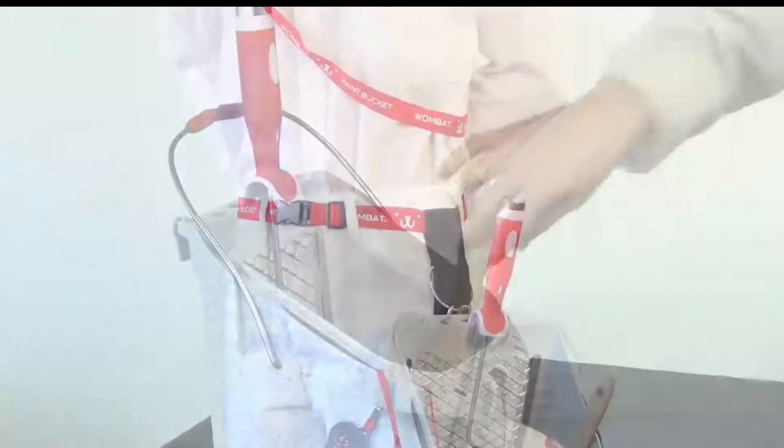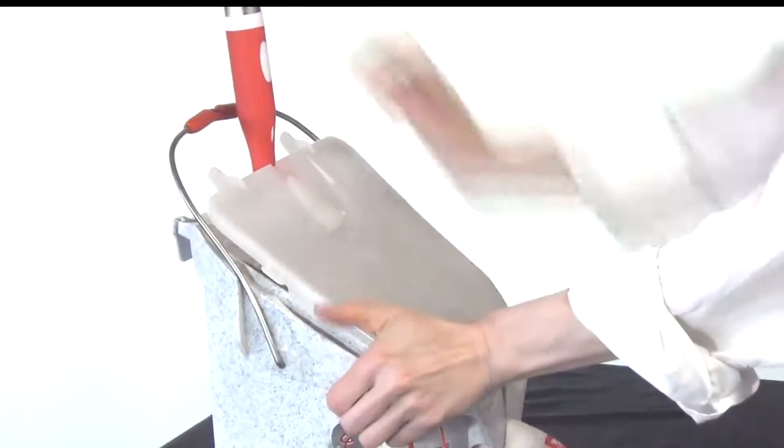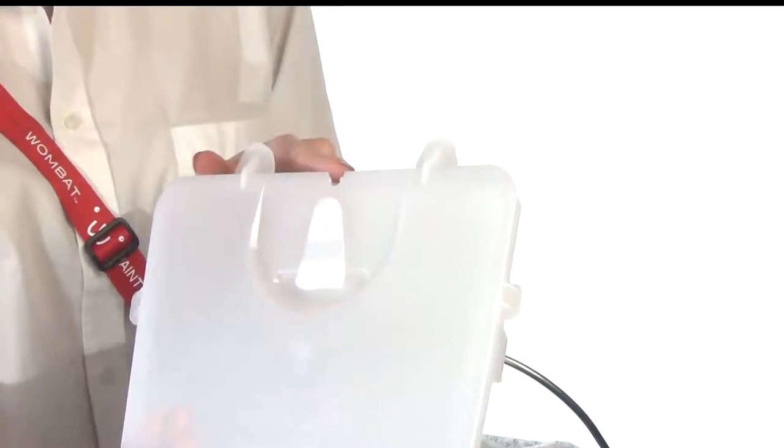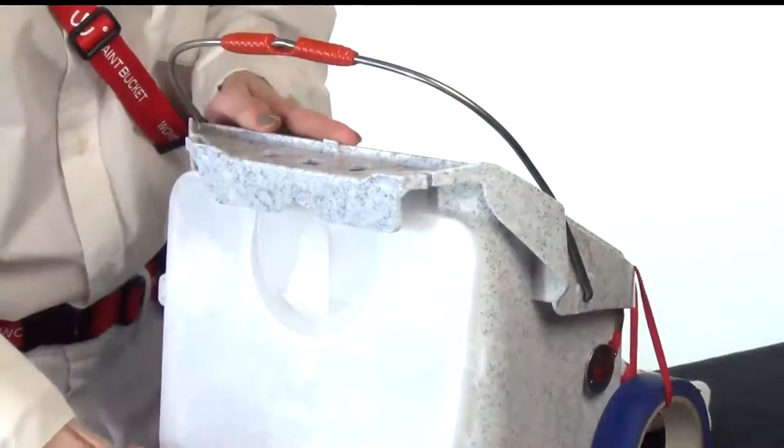Our optional tight sealing lid keeps your paint, roller, and brush fresh for days. No need for everyday wash-up. A groove and tab lets you seal the lid with the roller in place. You can store the lid under the grip lip when it's not in use.